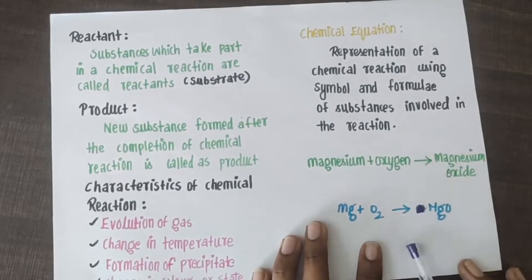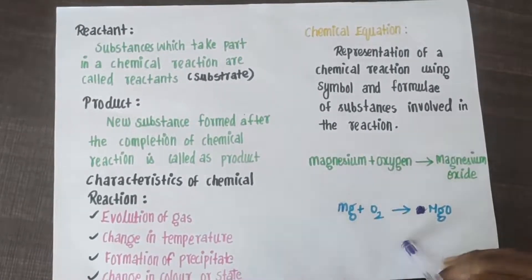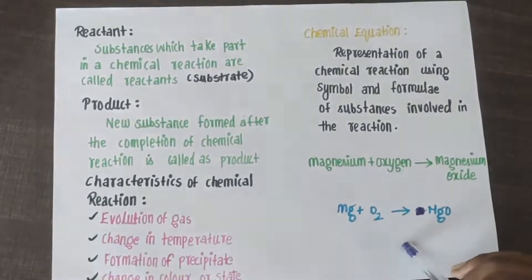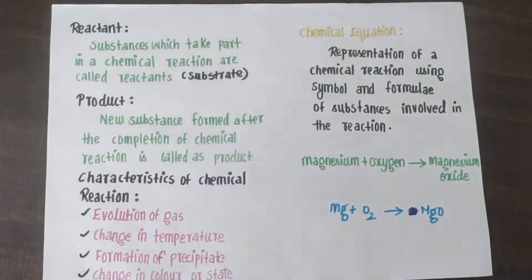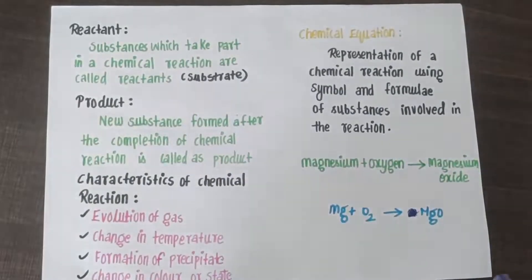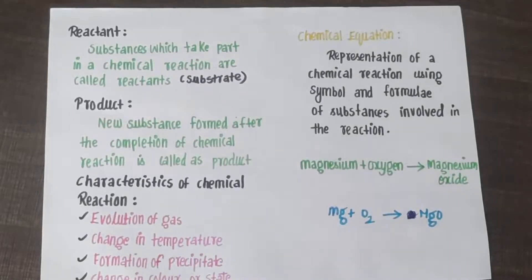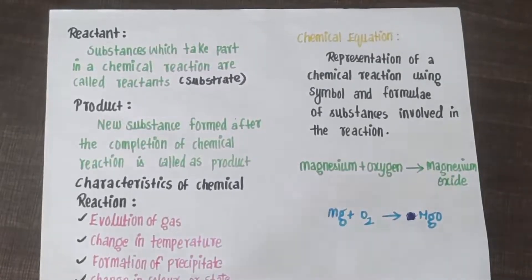This is the word equation and this is the symbolic equation. I hope you can understand what is chemical equation, how to use this, what does the left hand side of the equation says. Left hand side is the reactant, right hand side is product. This is what you have to understand.